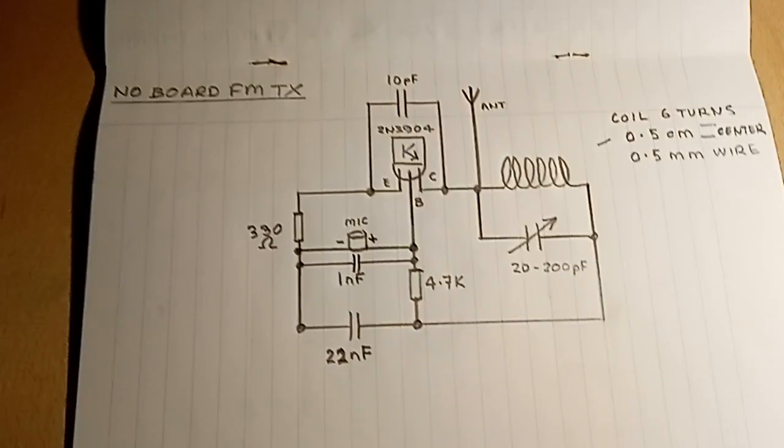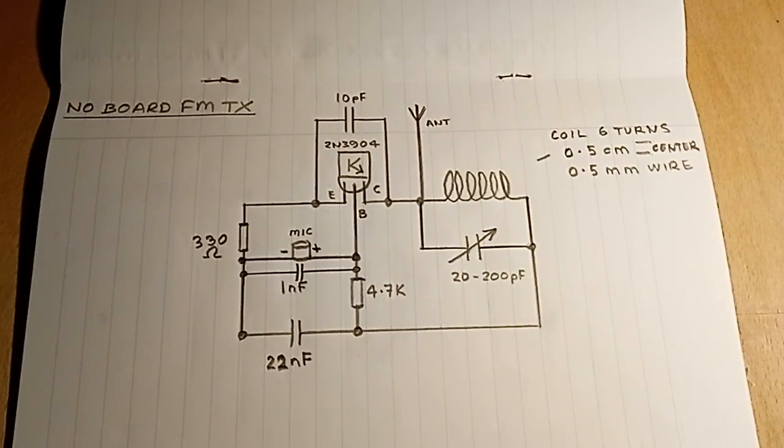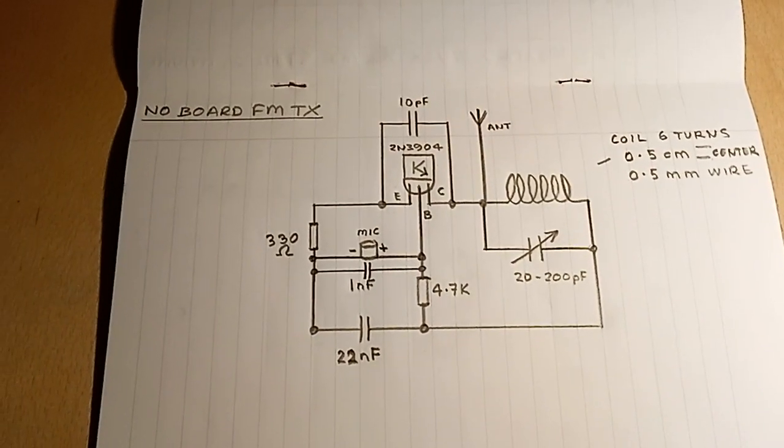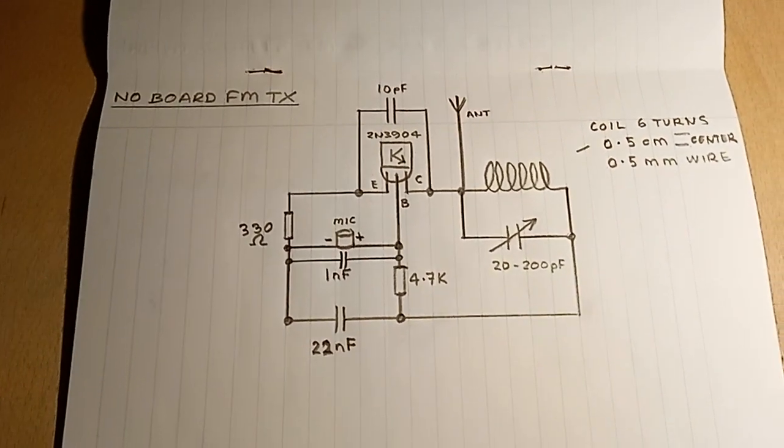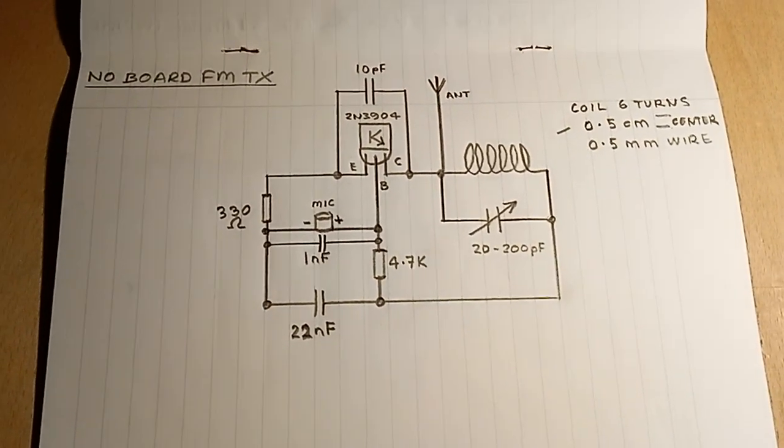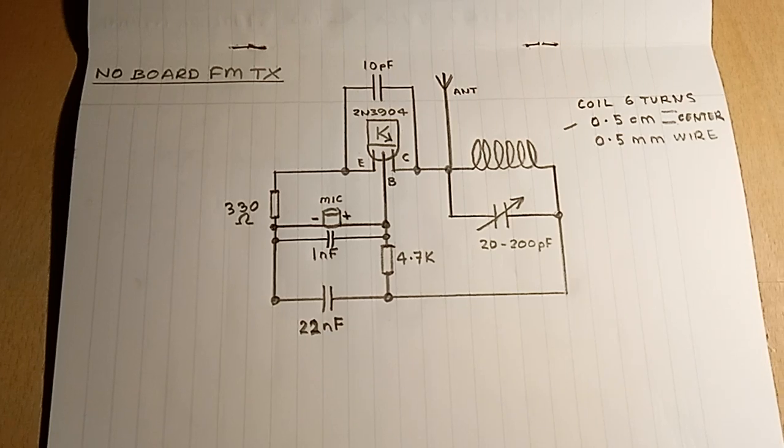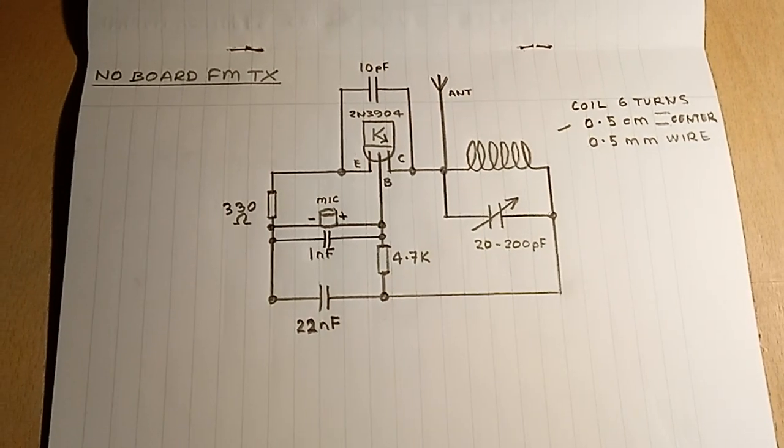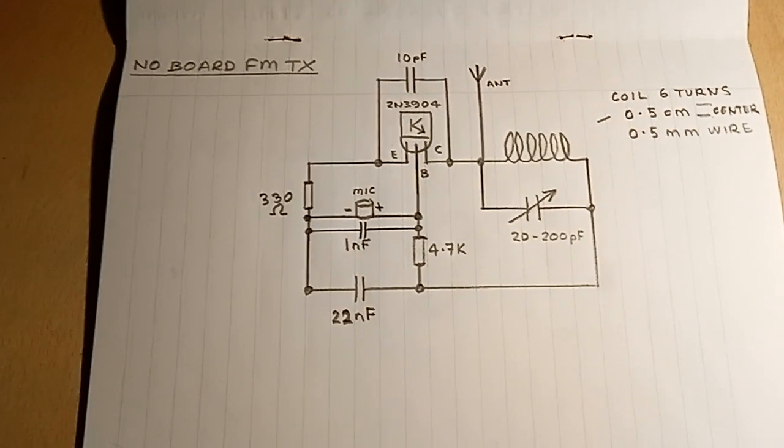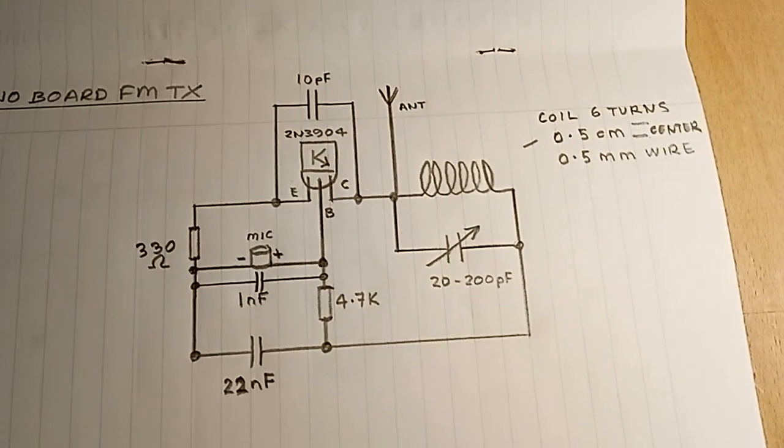Radio range is all about line of sight. With line of sight, you could probably get probably a couple of miles out of this with a really sensitive receiver. But if you're going through walls and in urban areas and everything, it just will not be as much as that.